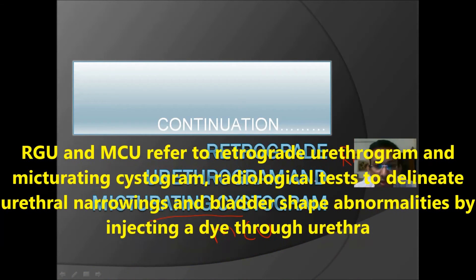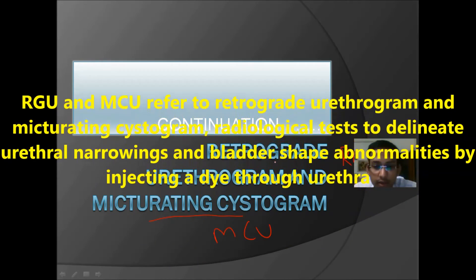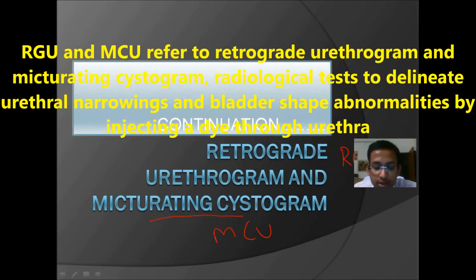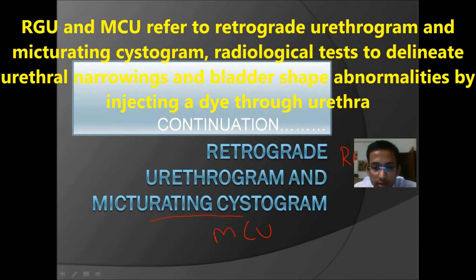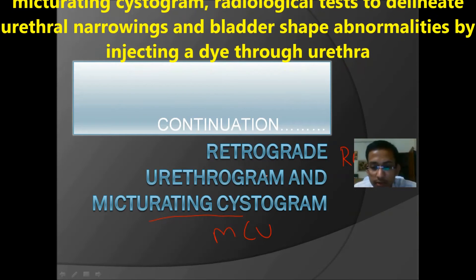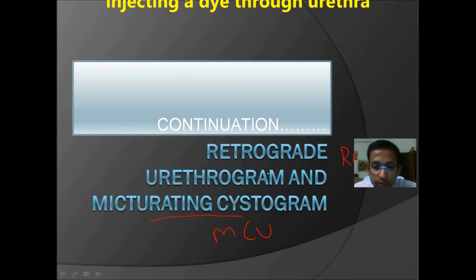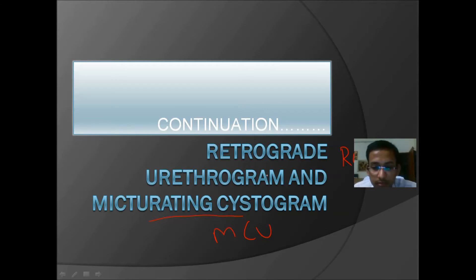Both are performed at the same time. In RGU we see the caliber, dilation, or pathology — essentially the anatomy of the urethra and its related pathology. In the Micturating Cystourethrogram, we ask the patient to micturate and we compare both pre-void and post-void films. Now let us see our case.